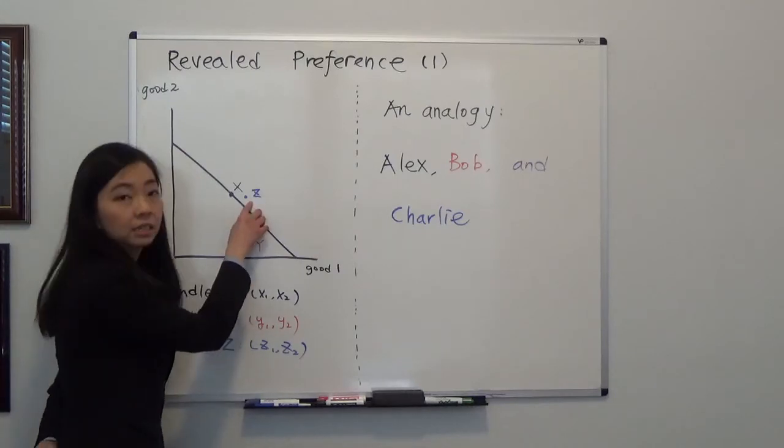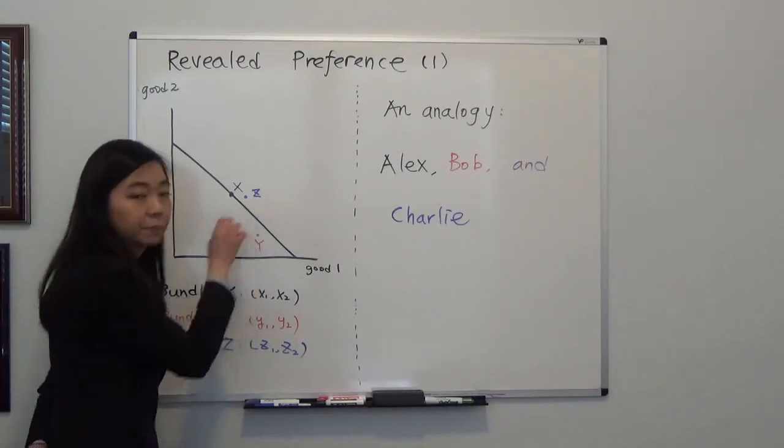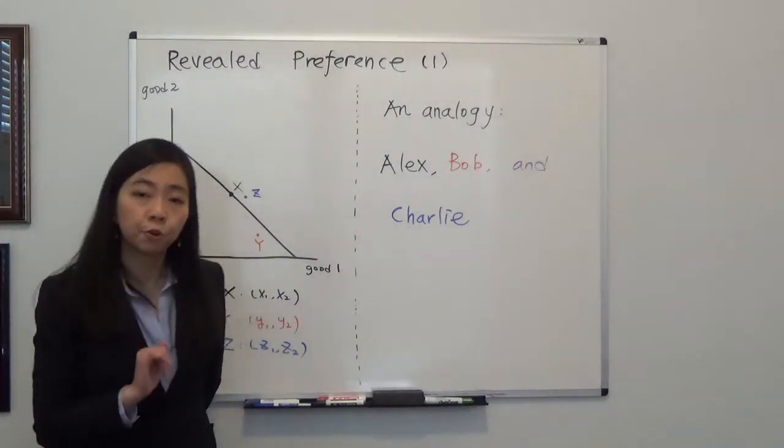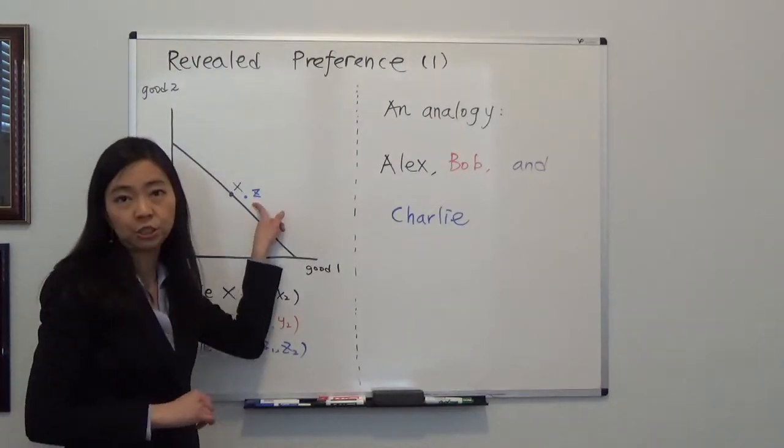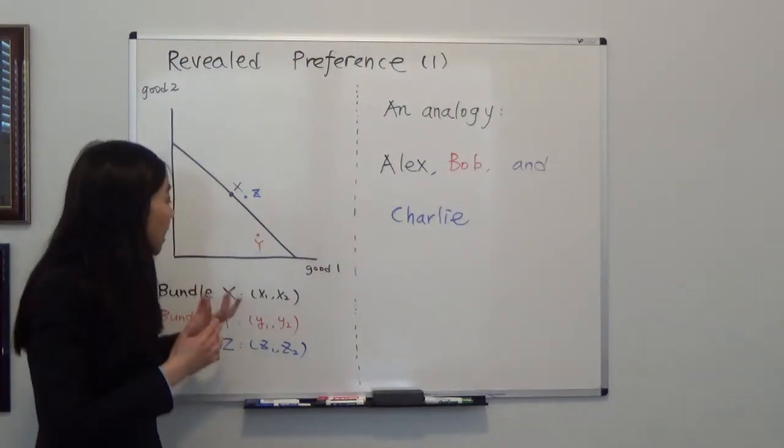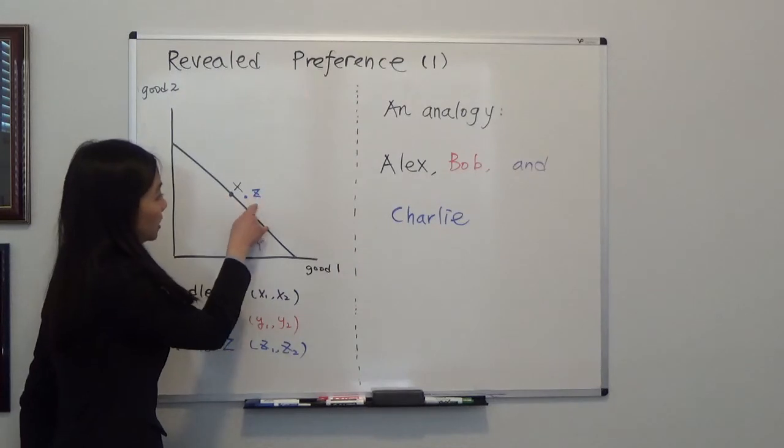And how about bundle Z? Well, bundle Z is outside of the budget line, so you cannot afford that. So that's out of the question. Therefore, you cannot tell whether you prefer X to Z or Z to X.